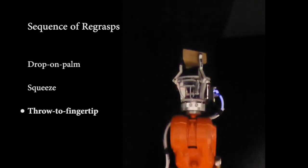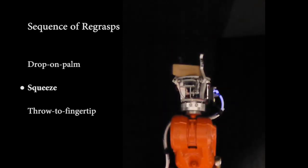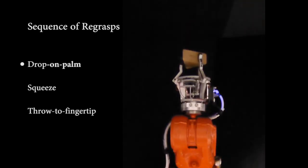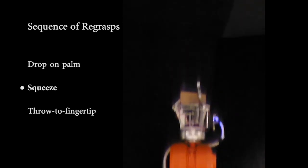In the future, we hope to model these regrasps and use those models to plan new sequences of regrasps. This will give robots the capability of arbitrarily changing the pose of the object in their hand.